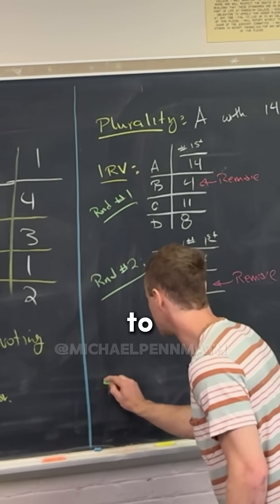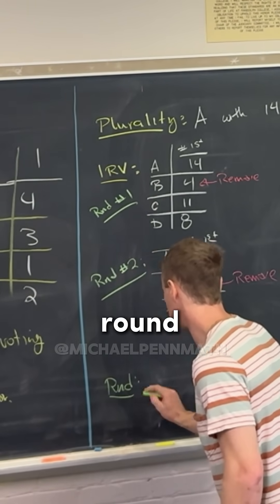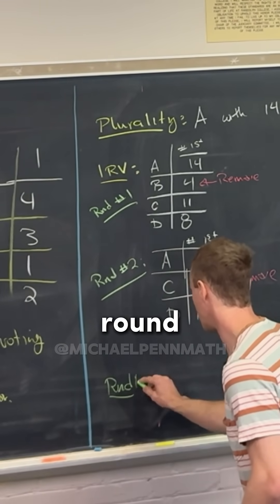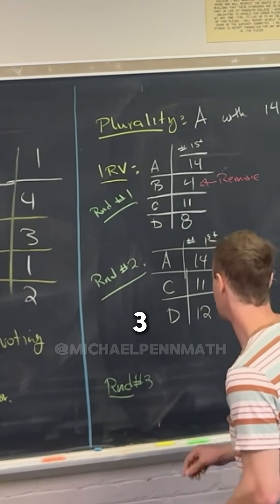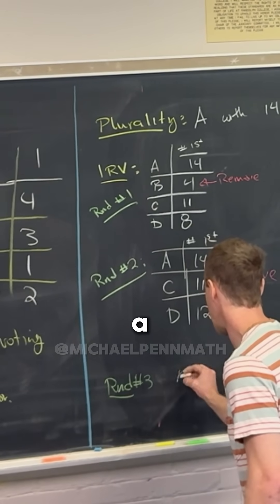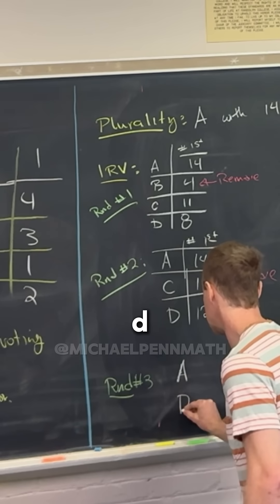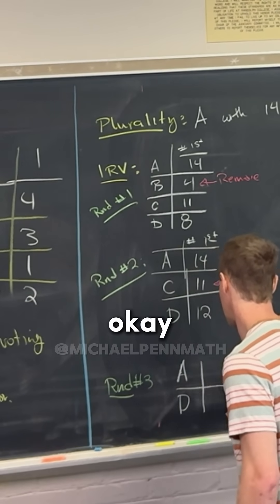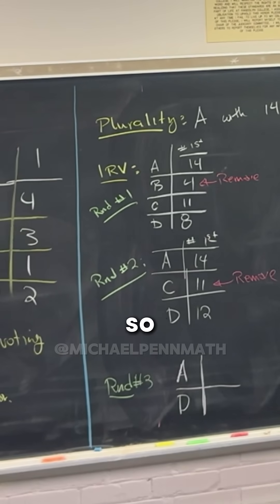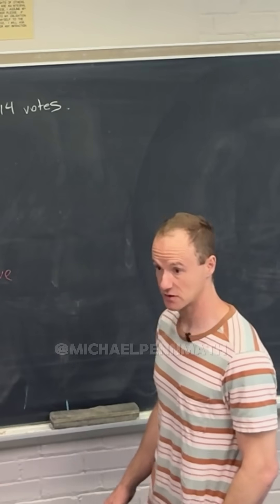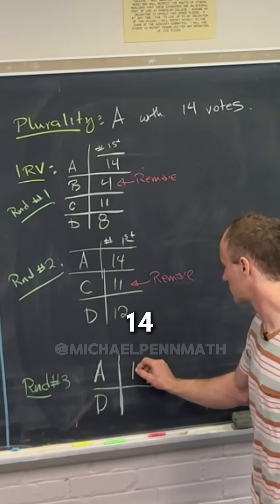And then we move on to the last round. And so that's going to be round number three. And that's just between A and D. Okay. So let's be careful here. How many first place votes does A have now? Still 14? Yeah. Okay. So 14.